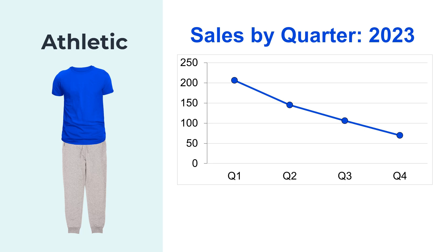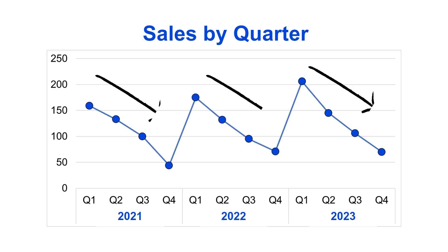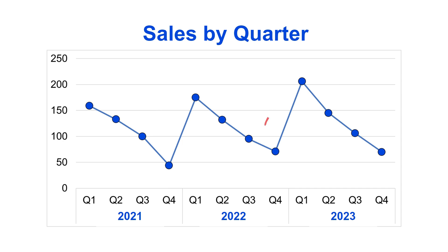A line chart is often used to identify patterns and trends. Here when we have the data for one year we can see that the sales are declining. So let's look at this data for three years and bring in the two previous years as well. There is an obvious pattern where each year the sales start off higher and then decline quarter by quarter, but at the beginning of the year the sales then rebound again in January. This data is for athletic clothing — it may be that at the beginning of each year people are making their new year's resolutions and want to buy workout clothes to start an exercise routine.